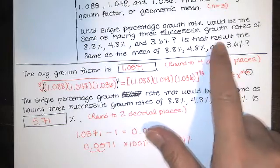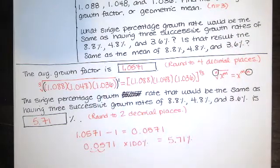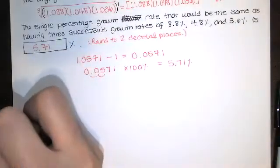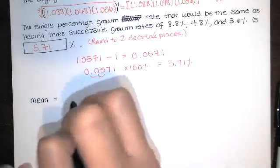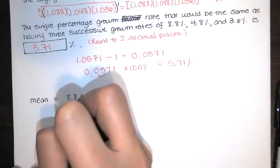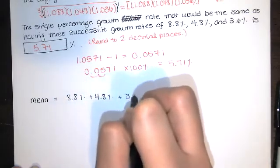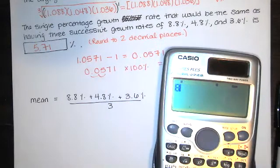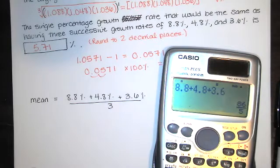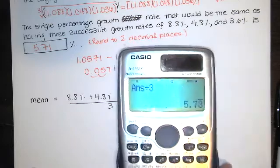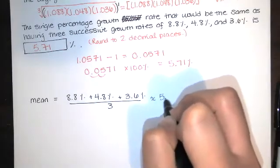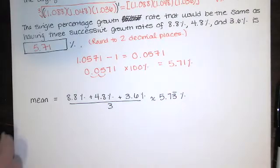And I believe they ask one more question. The question says, is that result the same as the mean of those three numbers? Well, we can find out. Let's compute the mean of those three numbers. The mean of those three numbers just comes from adding them together. And since we have three of them, we'll divide by 3. So I've got 8.8 plus 4.8 plus 3.6 divided by 3. It's 5.733%, and that 3 is actually repeating.